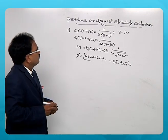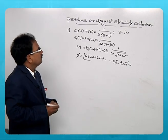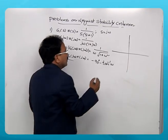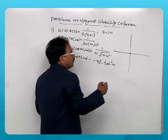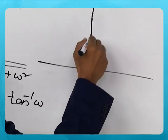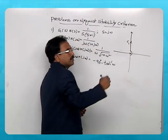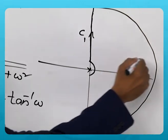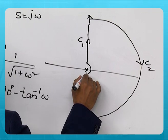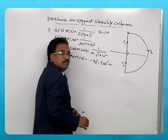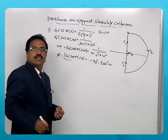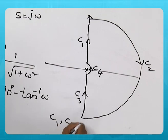For this particular problem, because there is a pole at origin, the pole at origin must be bypassed in the Nyquist contour. We consider section C1 on the positive imaginary axis, the infinite radius section as C2, the negative imaginary axis as C3, and the fourth section bypassing the pole at origin as C4. So there are four sections: C1, C2, C3, and C4.